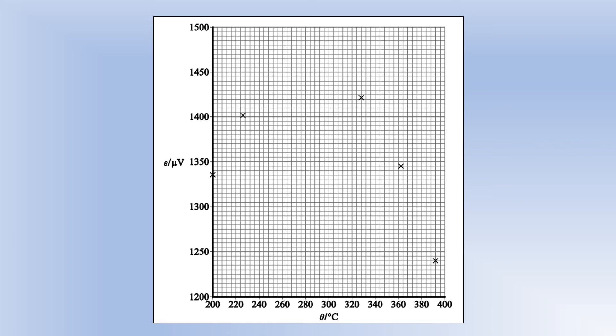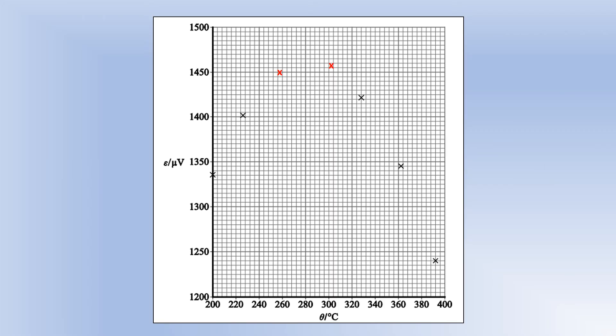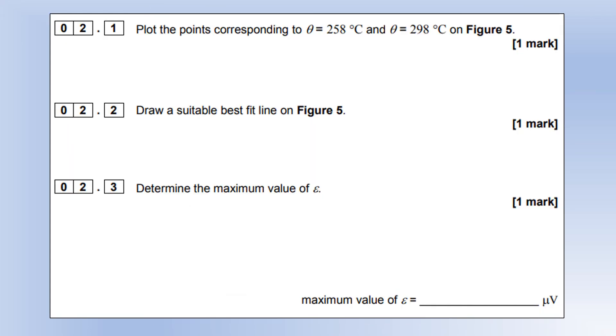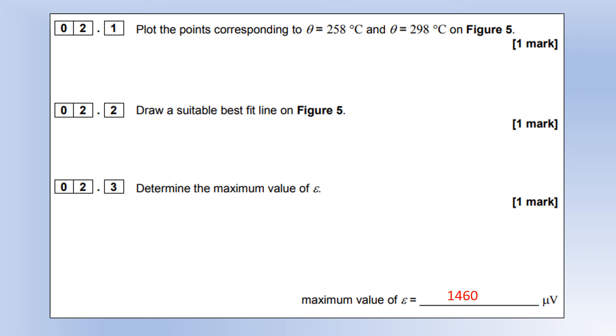What we're going to do is plot a graph of this. The first thing we do is plot a graph and draw a line of best fit. These are the two points that we're missing. There's our line of best fit - we want a nice smooth curve that goes through the points. To determine the maximum value of the EMF, we just need to go across from the maximum, and the value was 1460 microvolts.